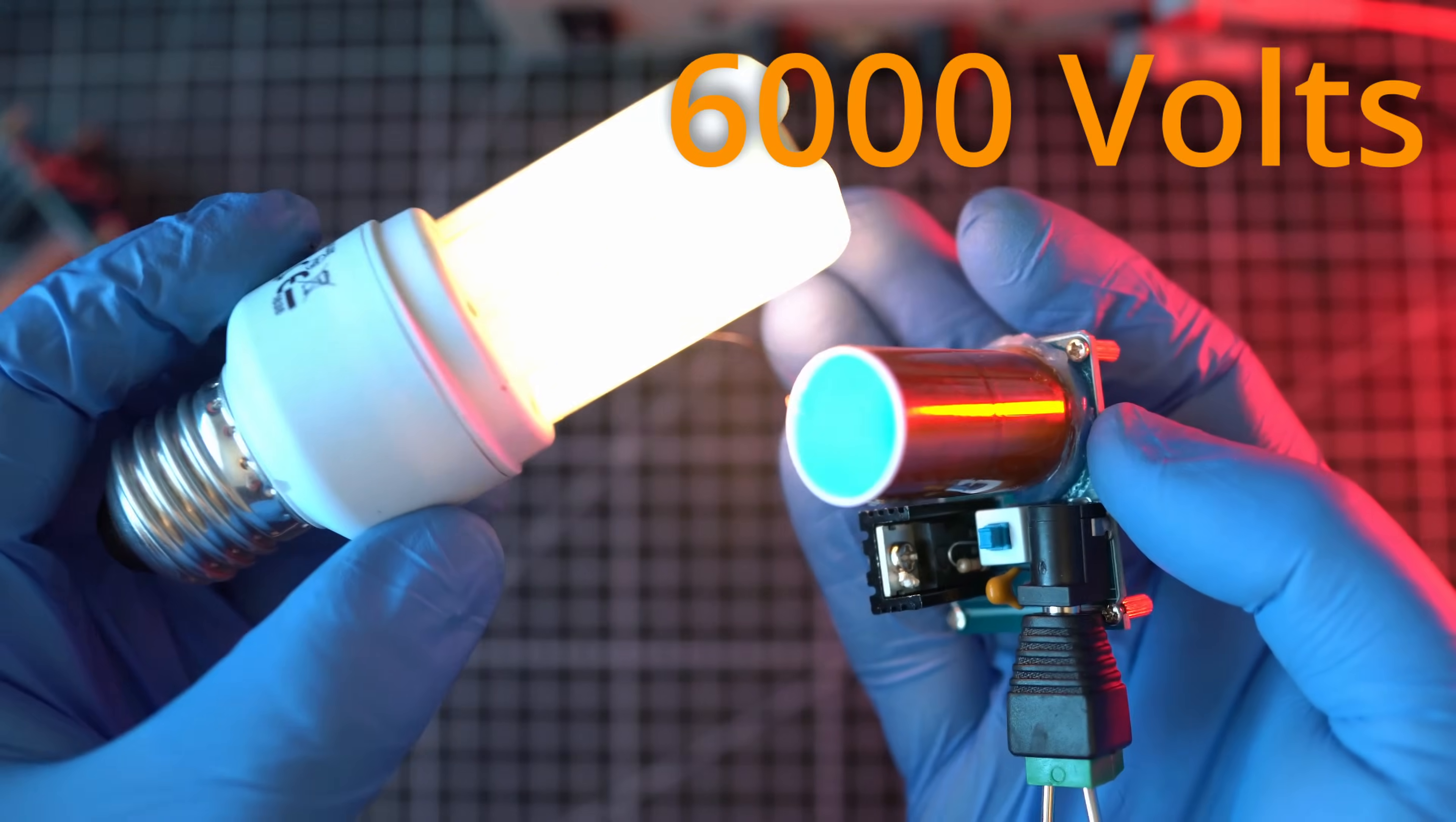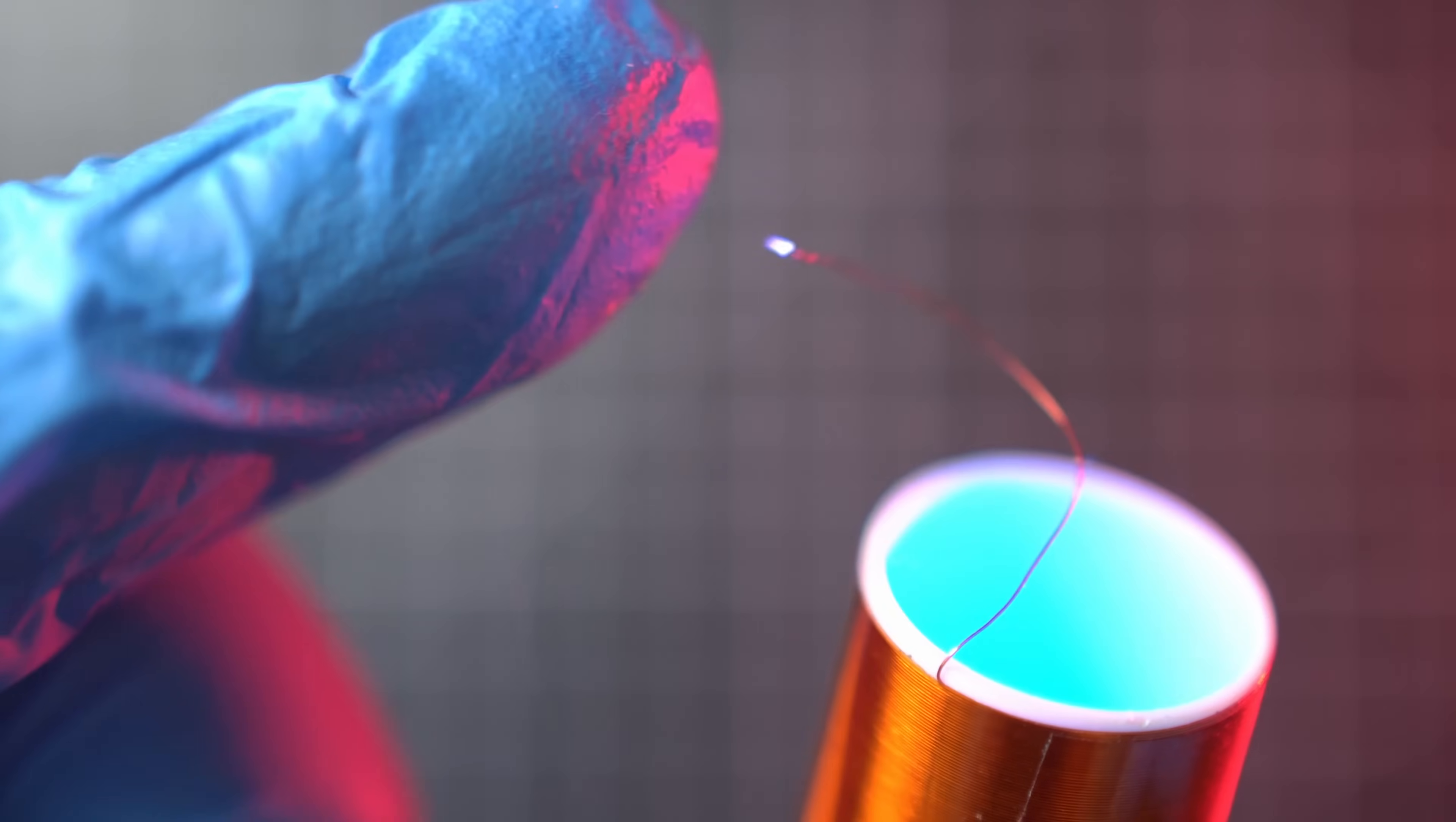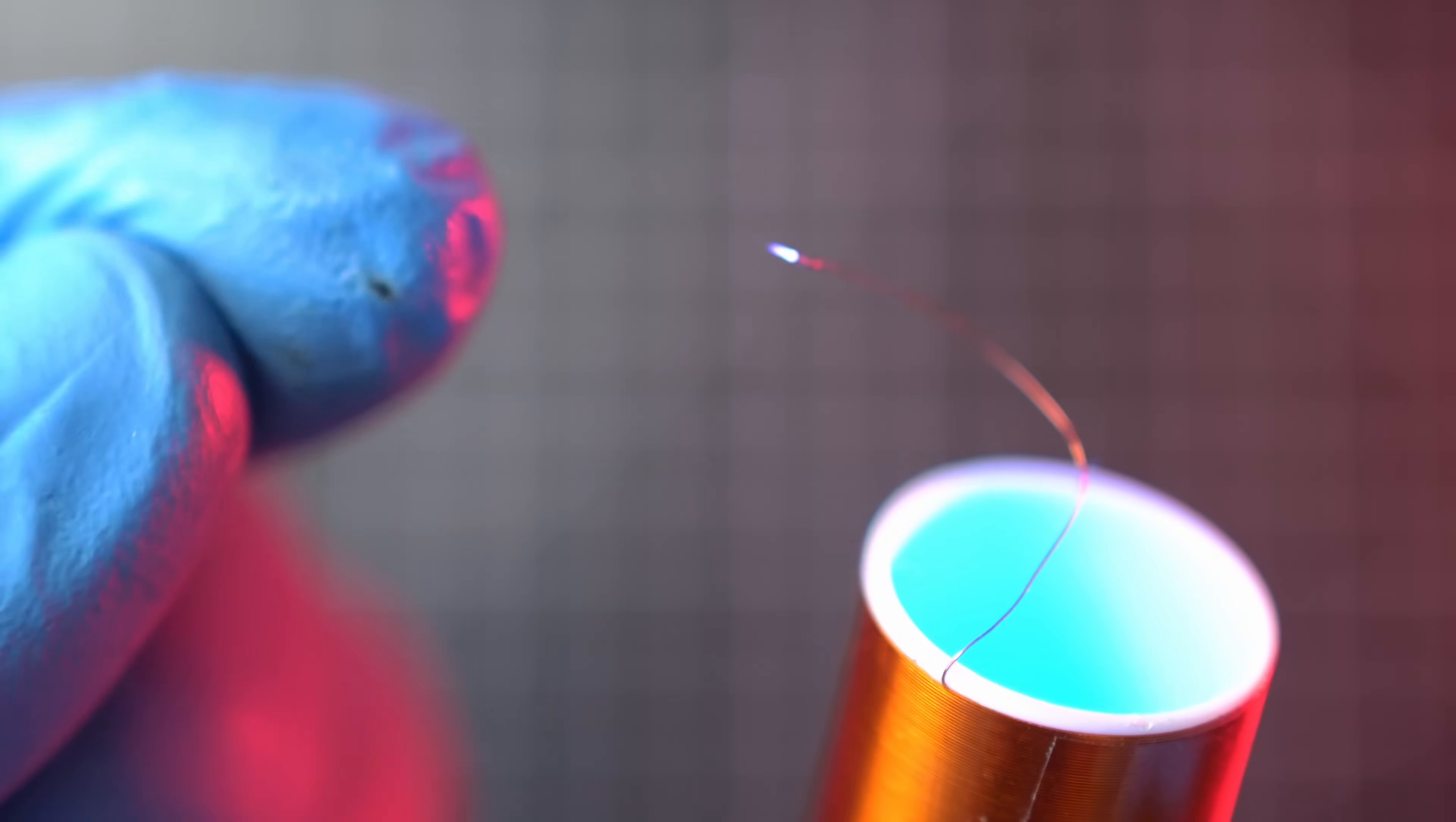2 box Tesla coil with 6000 volts that creates this cool arc. I mean come on. Welcome back. I have here mini Tesla coil from AliExpress.